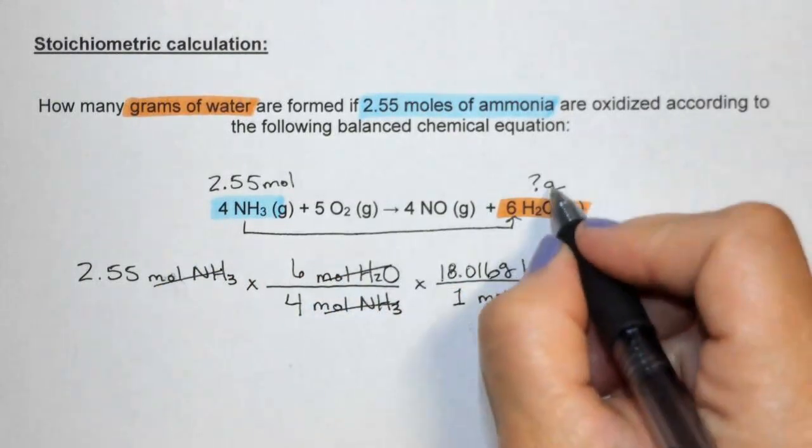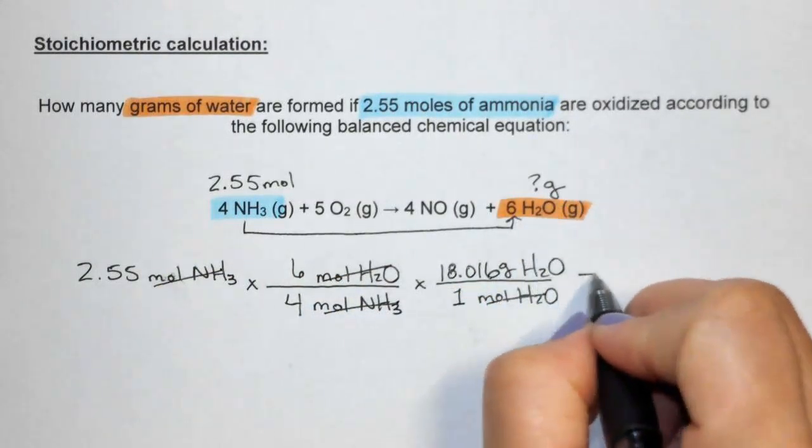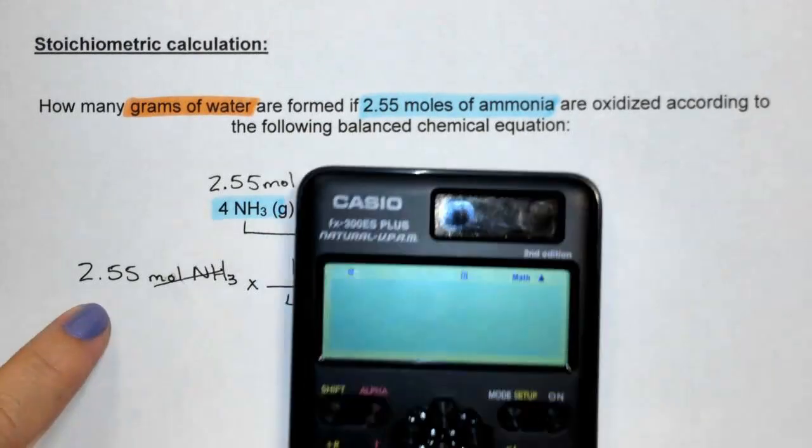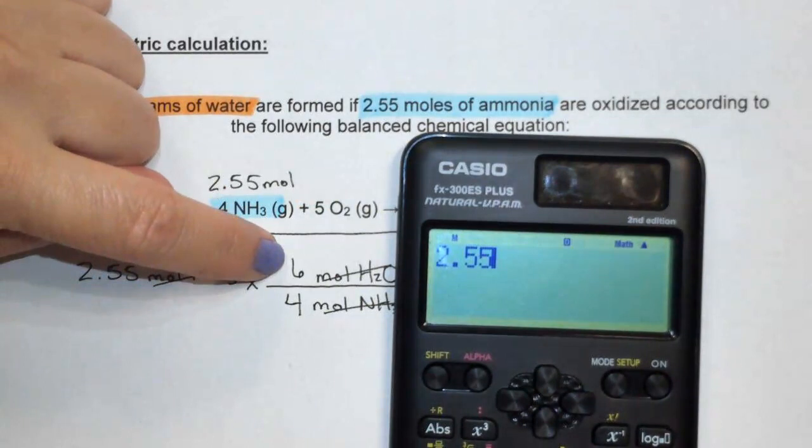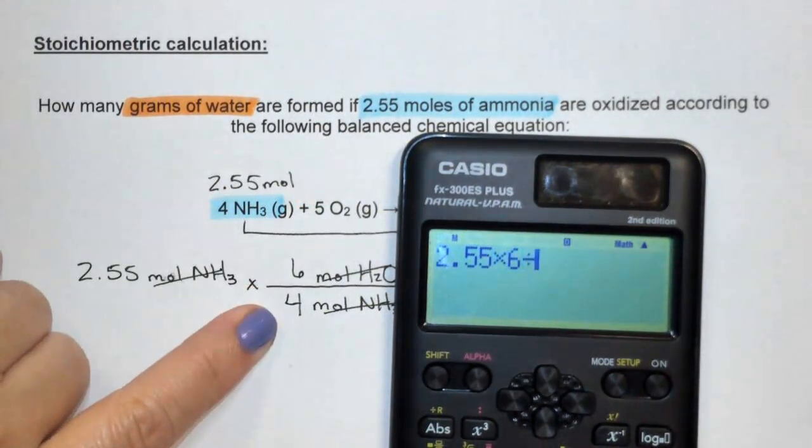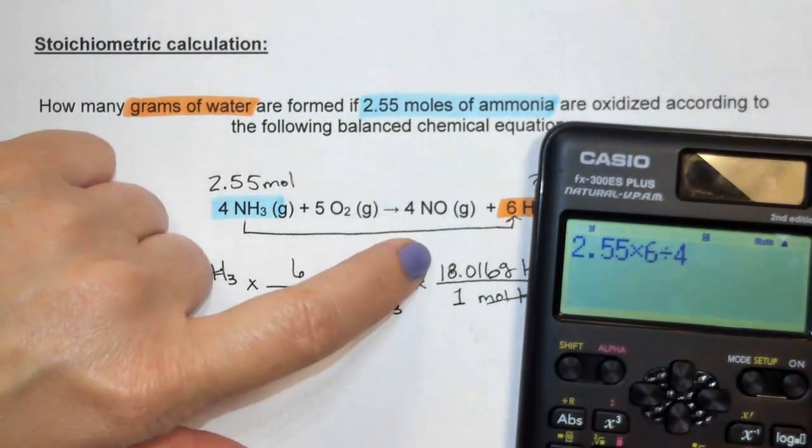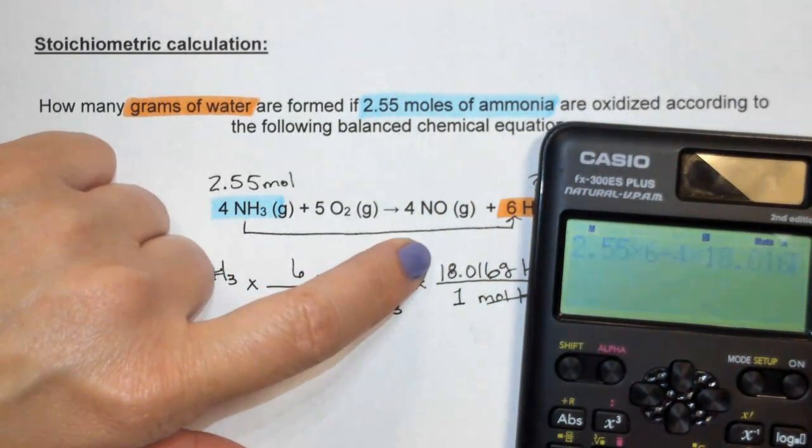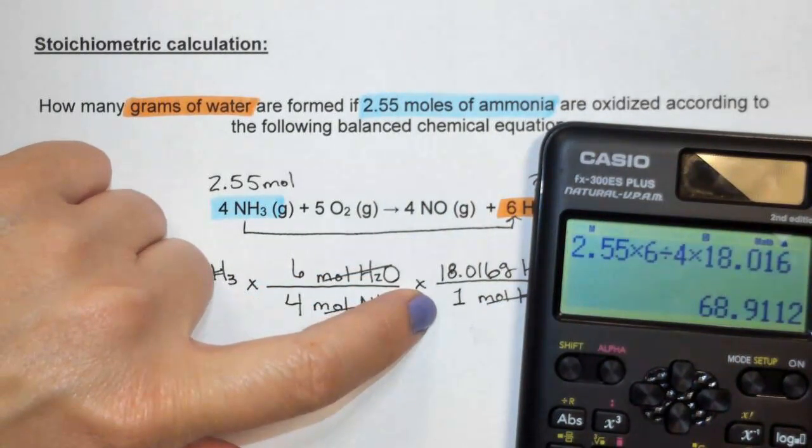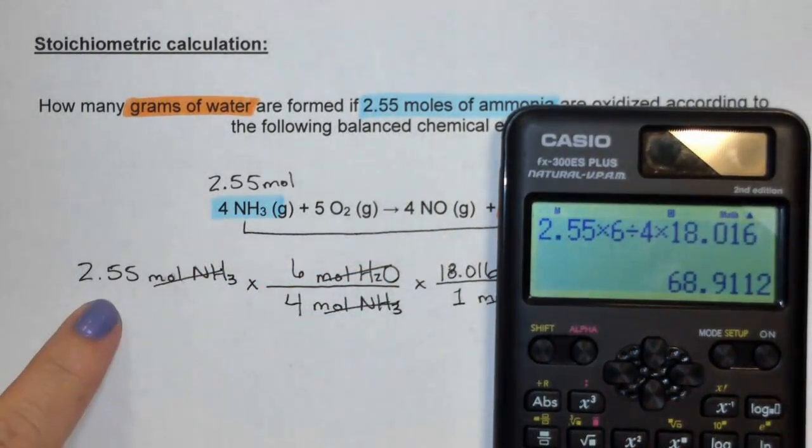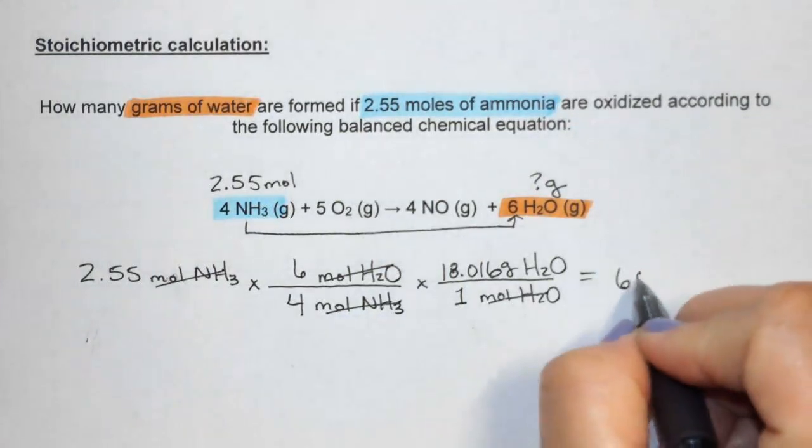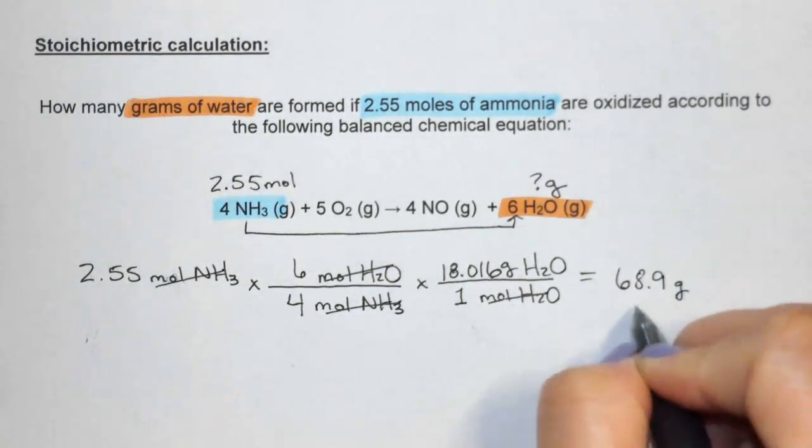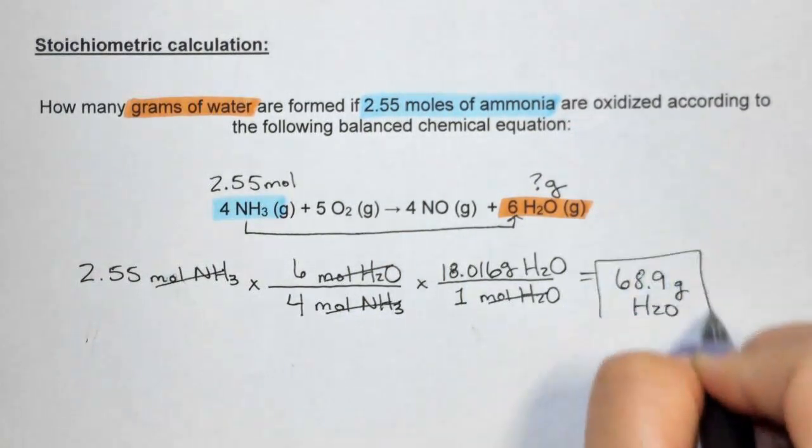The calculation will be 2.55 times the top divided by the bottom times 18.016, and we get 68.9. I need three significant figures, so I'm going to round to 68.9 grams of water as the final answer.